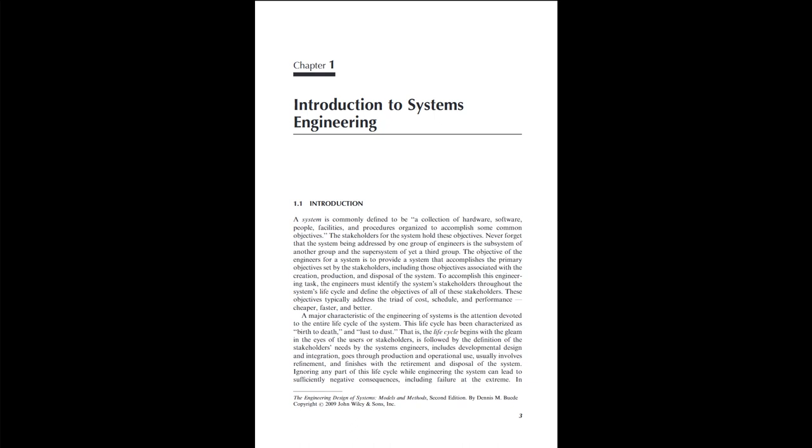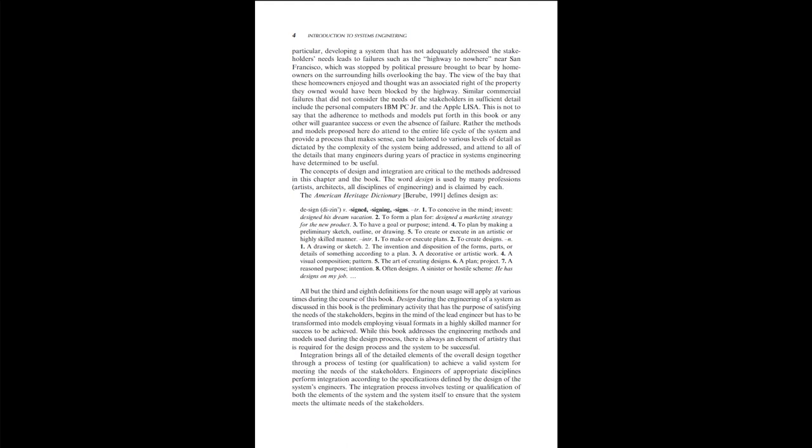In the Engineering Design of Systems: Models and Methods, 2nd Edition, by Dennis M. Bwade, Copyright 2009, John Wiley & Sons, Inc. In particular, developing a system that has not adequately addressed the stakeholders' needs leads to failures such as the highway to nowhere near San Francisco, which was stopped by political pressure brought to bear by homeowners on the surrounding hills overlooking the bay. The view of the bay that these homeowners enjoyed would have been blocked by the highway. Similar commercial failures that did not consider the needs of the stakeholders in sufficient detail include the IBM PC Jr. and the Apple Lisa.